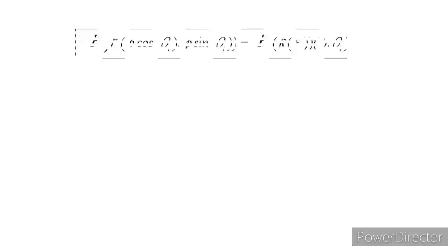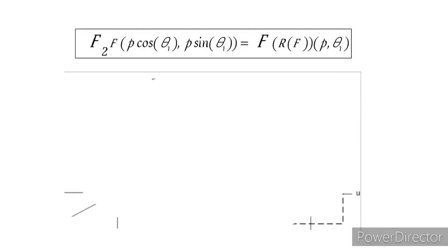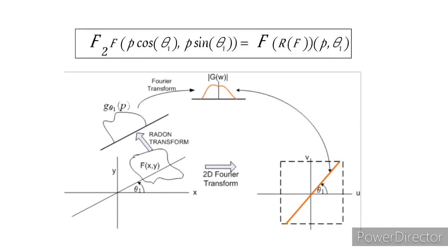This idea is demonstrated in the figure below. In the left part of the figure we start with a function capital F and apply the Radon transform to get a projection small g, to which we then apply the Fourier transform, receiving the orange capital G function at the top of the figure. In the right half we take the 2D Fourier transform of the orange slice of capital F parallel to the projection line. This 2D Fourier transform also equals the orange capital G function depicted at the top of the image.